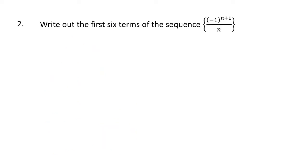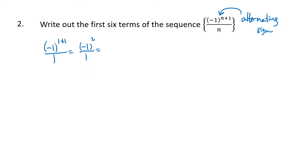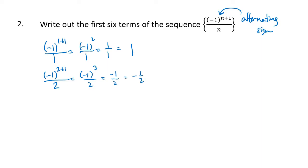Similar problem here. We see this little widget, the minus 1 to the n plus 1. All that's really doing is creating what we call an alternating sign. When we look at the first term, which is minus 1 to the 1 plus 1 divided by 1 — that's minus 1 squared divided by 1, which is 1 over 1, which is 1. The second term is minus 1 to the 2 plus 1 divided by 2 — that's minus 1 cubed divided by 2, and minus 1 cubed is minus 1. So we're going to see that in this sequence the terms alternate between positive and negative.